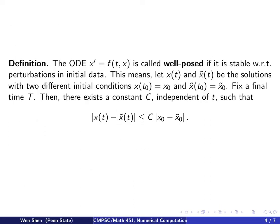Before we talk about the global error, we need to introduce a definition, a definition of well-posedness of the ODE. So the definition is the following. The ODE we study, x' = f(t,x), is called well-posed if it is stable with respect to perturbations in initial data.